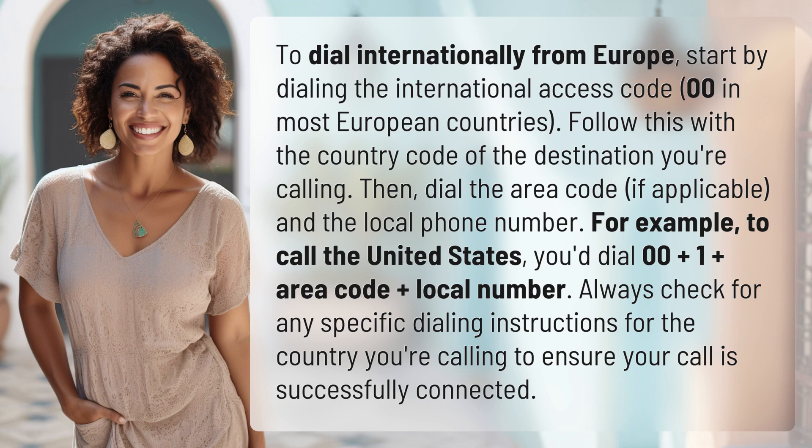For example, to call the United States, you'd dial OO plus 1 plus area code plus local number. Always check for any specific dialing instructions for the country you're calling to ensure your call is successfully connected.